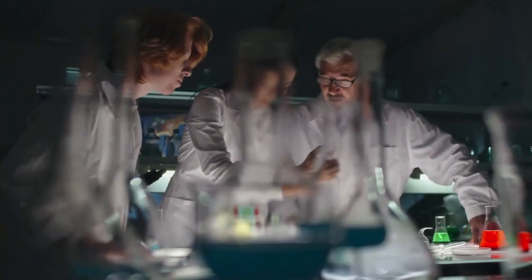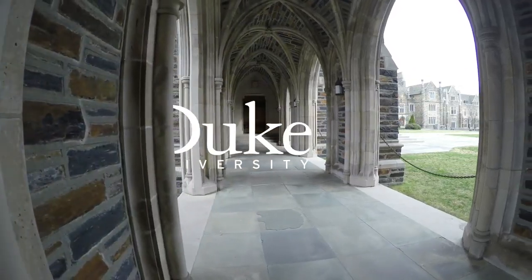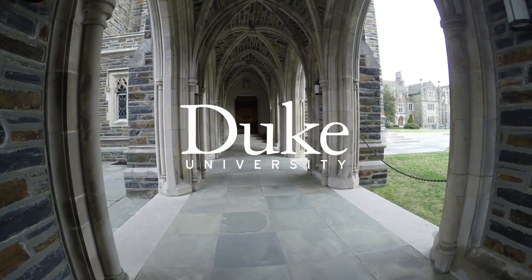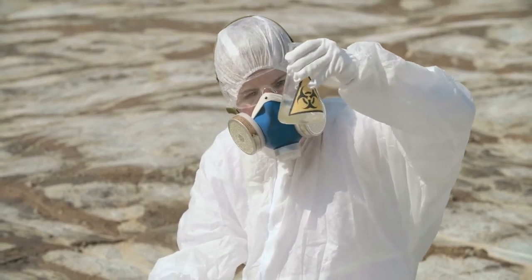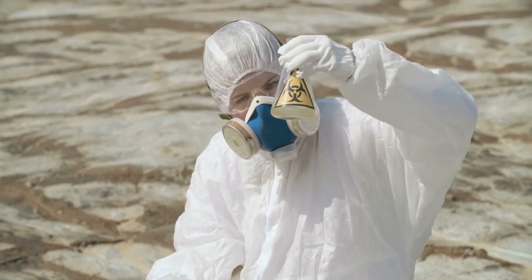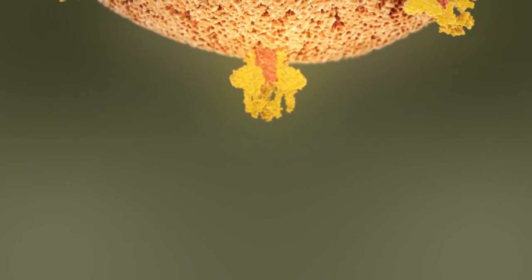Today we delve into a revolutionary study conducted by researchers at the Duke Human Vaccine Institute, also called the DHVI, shedding light on a promising avenue in the fight against AIDS. At the forefront of this research is the discovery of a tiny yet pivotal part of the surface of the HIV virus known as the envelope glycoprotein.